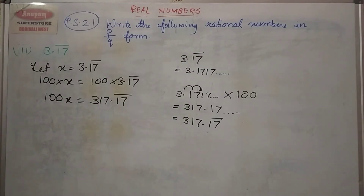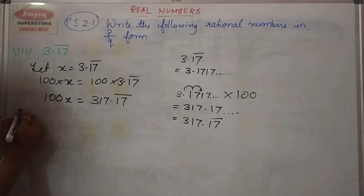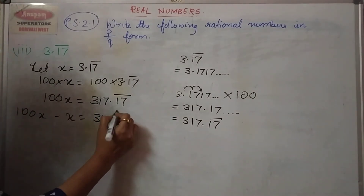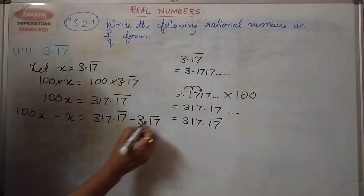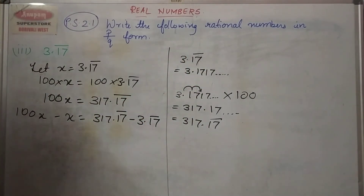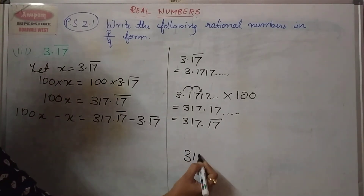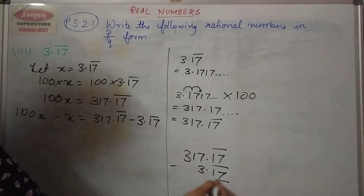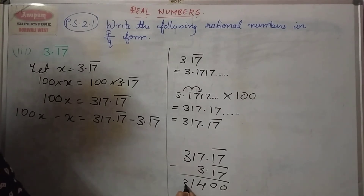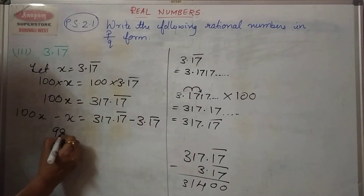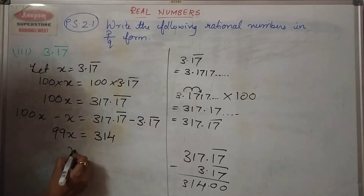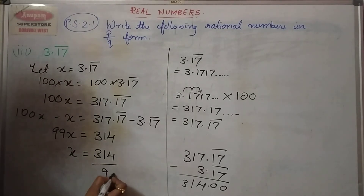The third step is subtracting. 100x minus x is equal to 317.17 bar minus 3.17 bar. Subtracting, this gives 99x is equal to 314. Therefore x will be 314 upon 99.